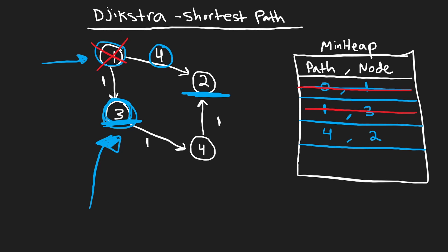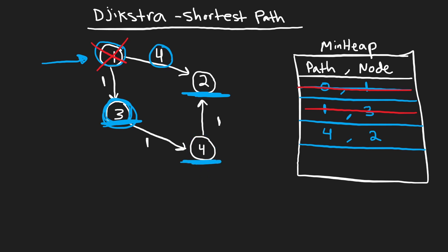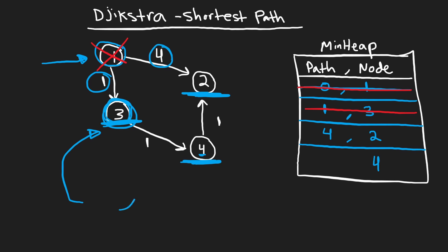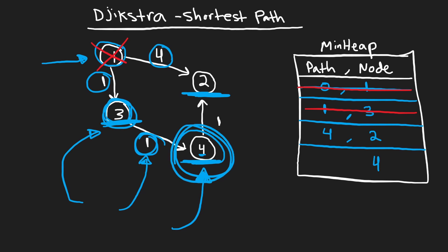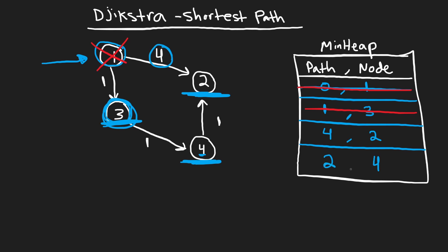From node three, we look at its neighbors. It only has one outgoing edge — to node four with weight one. But we don't just add weight one; we add the total cumulative path from the start. Since it took one to reach three and another one to reach four, we add (2, node 4) to the min heap. We're keeping track of the total path length to reach each node from the starting position.